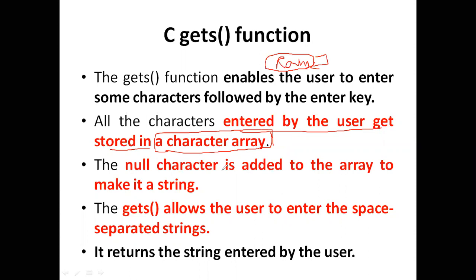If no value is entered, the string will contain a null character (\0). The null character is added to the array to make it a valid string. For example, if 'rom' is entered, the array stores r, o, m, and then the null character — so the size of the array is 4, including the null character.